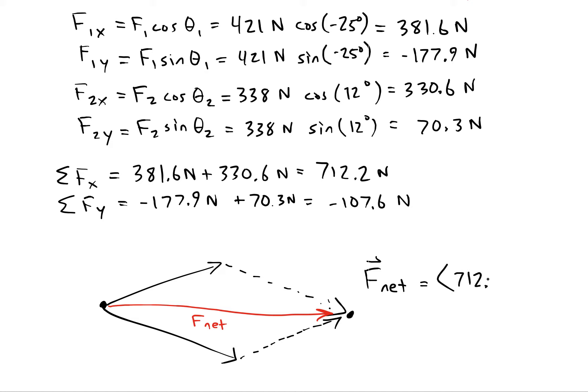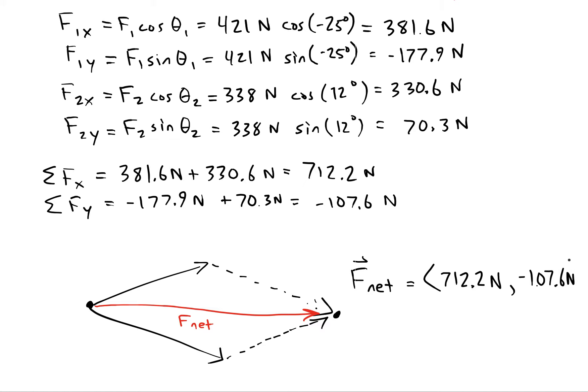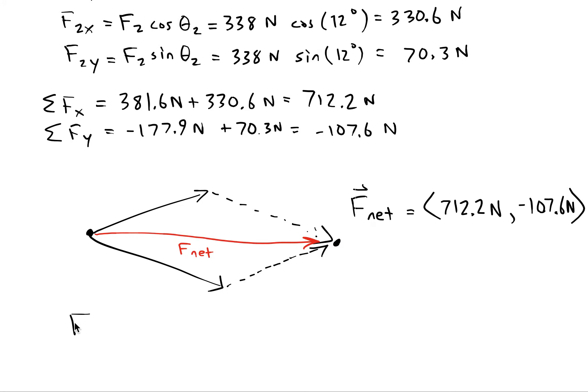Your F net is equal to 712.2 and negative 107.6. You want the magnitude, so the magnitude will be the square root of the squares of the components. I get 720 Newtons.